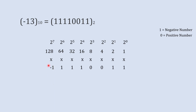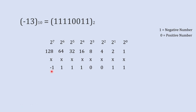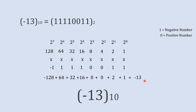If you want to understand why we use minus 1 for the most significant bit in detail, I've explained it in a previous separate video. So now we multiply 128 by minus 1, giving minus 128, then 64, 32, 16, 0, 0, 2, and 1. When we add all these together, we get minus 13.